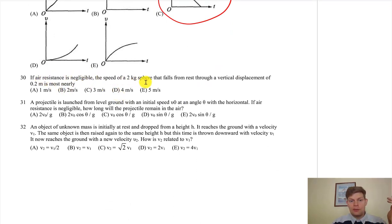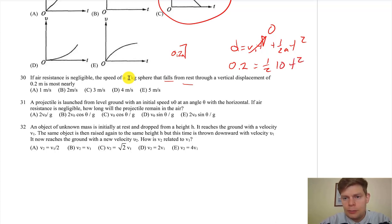The air resistance is negligible. The speed of a two kilogram sphere that falls from rest through a vertical displacement of 0.2 meters is most nearly—we don't care about this because we're not doing dynamics. It's basically just d equals v_i t plus one half a t squared. We got some 0.2 meter cliff. If it was dropped, if it falls from rest, this is just zero, and so we've got 0.2 equals one half times 10 times t squared, because we're using 10 instead of 9.8.